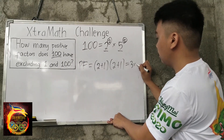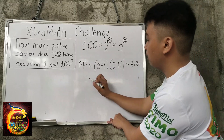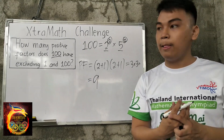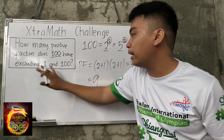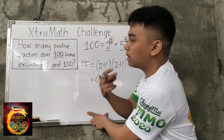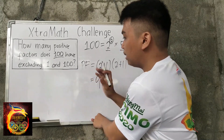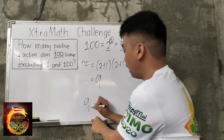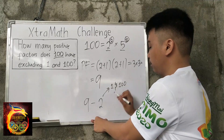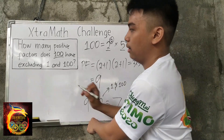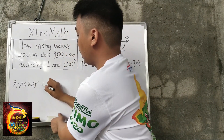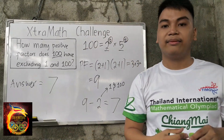2 plus 1 is 3, and 2 plus 1 is 3, so 3 times 3 equals 9. We have 9 positive factors of 100. But there is a restriction: excluding 1 and 100. Both 1 and 100 are among the 9 positive factors, so we subtract 2: 9 minus 2 equals 7. Therefore, our final answer is 7.